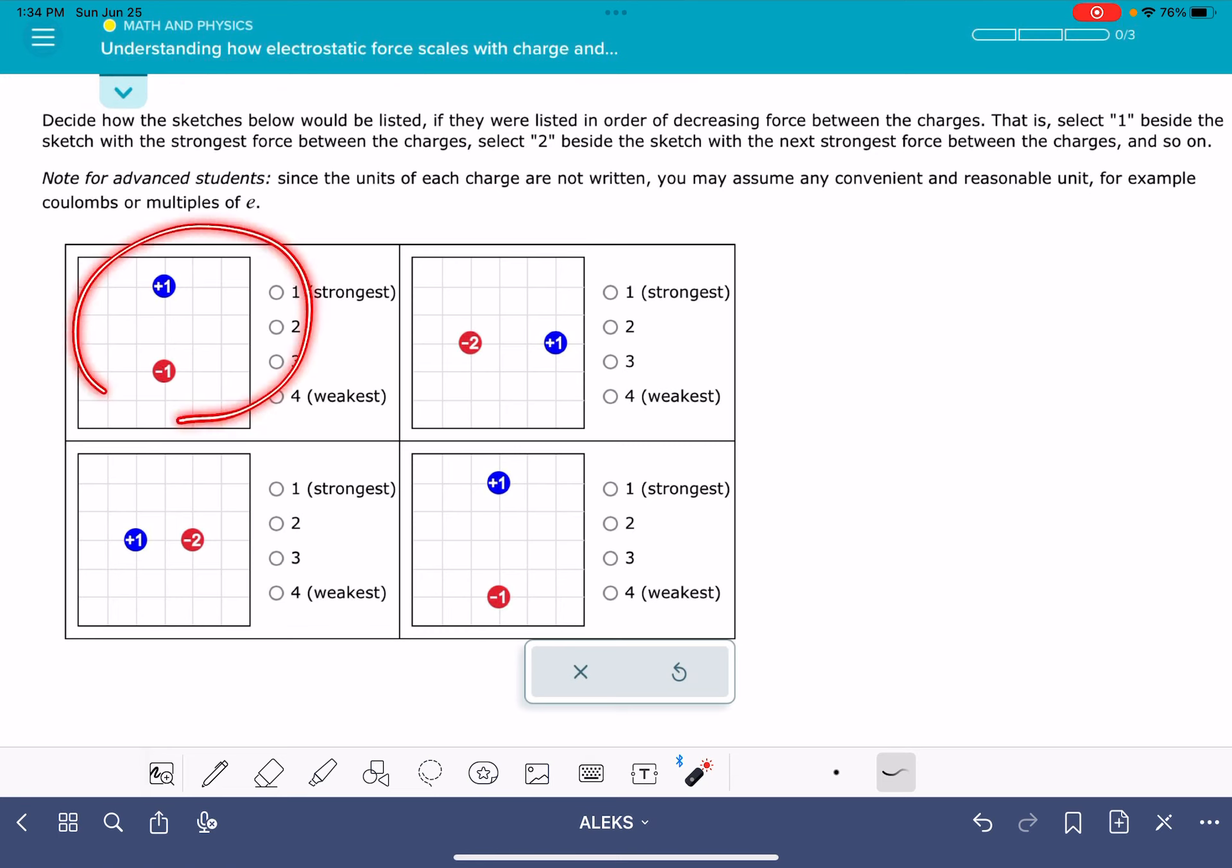In this problem, you're going to be given four different scenarios with each scenario having two point charges in it, and you're asked to rank the strength of the forces experienced between the two charges in each one of these scenarios.